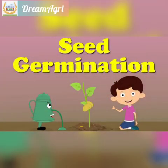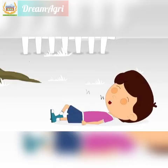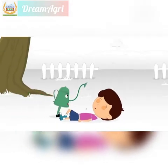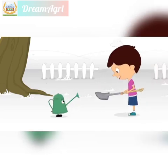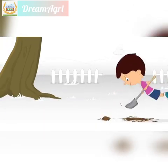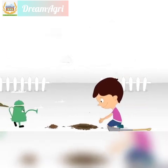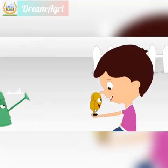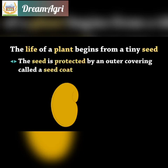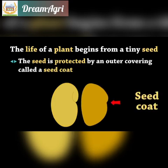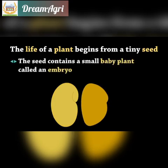Our topic for today is seed germination. The life of a plant begins from a tiny seed. The seed is protected by an outer covering called a seed coat. The seed contains a small baby plant called an embryo.